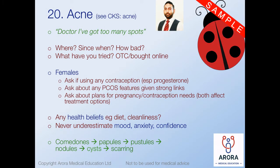Female scenarios with acne are slightly different - a few additional things to ask. Ask about current contraception, as progesterones can sometimes make acne worse. Think about underlying polycystic ovarian syndrome: ask about periods, oily skin. Ask about plans for pregnancy and contraception needs going forward - this might impact both what you can give and what options are available for management. Also explore health beliefs: some people think diet makes it worse and have cut out foods, others think it's due to cleanliness.